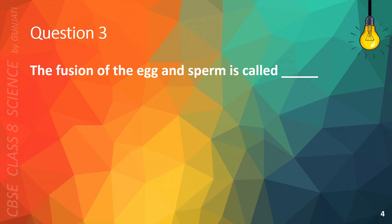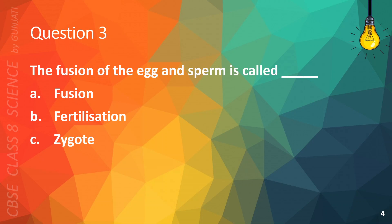Question 3. The fusion of the egg and sperm is called: A. Fusion, B. Fertilization, C. Zygote, or D. None of the above. The correct answer is B. Fertilization.